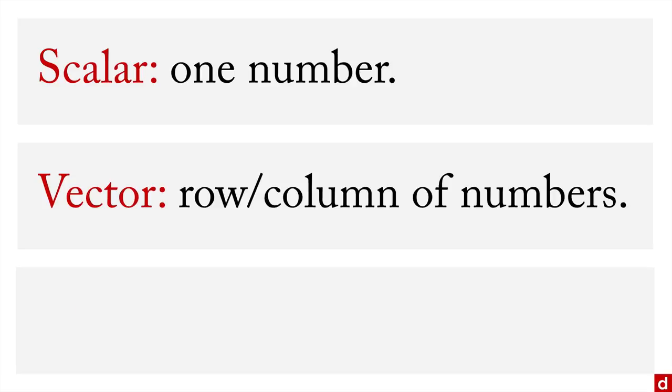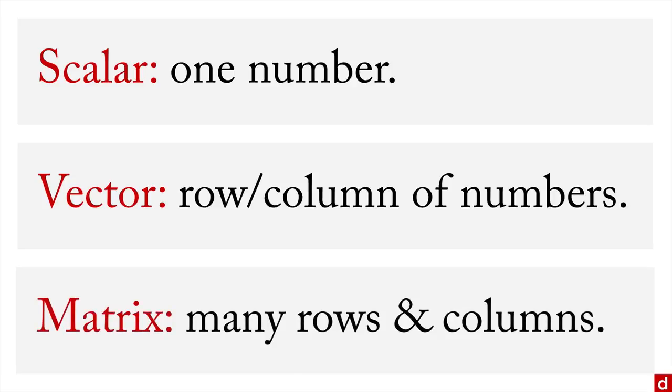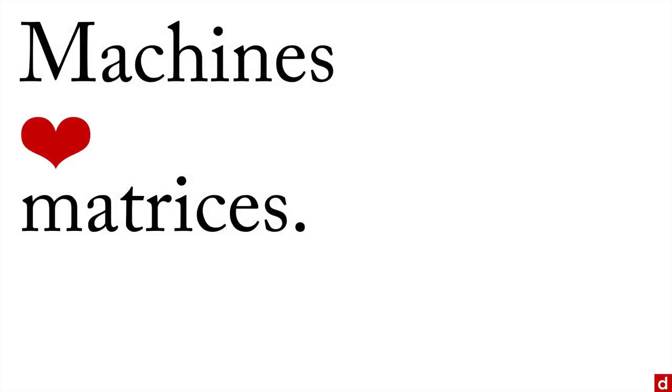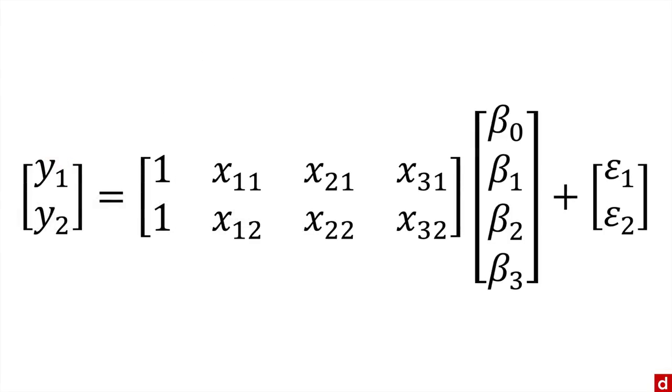And then finally, a matrix consists of many rows and columns, sort of a big rectangle of numbers. The plural of that, by the way, is matrices. And the thing to remember is that machines love matrices.